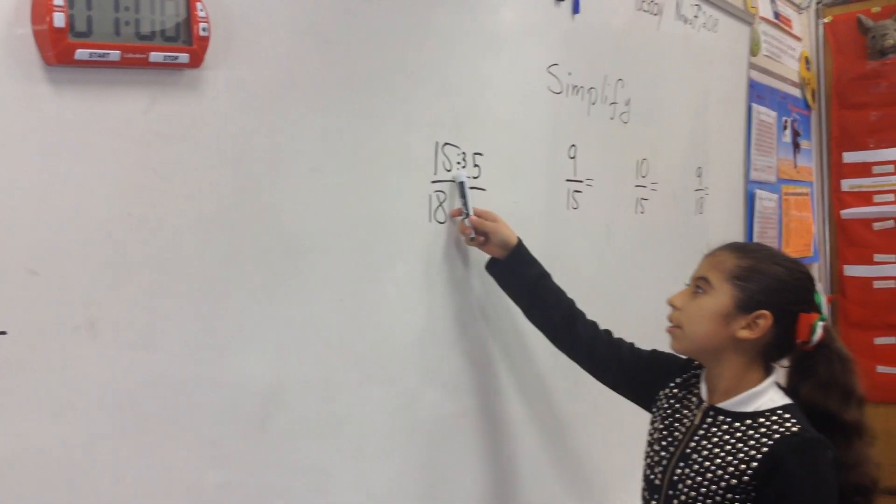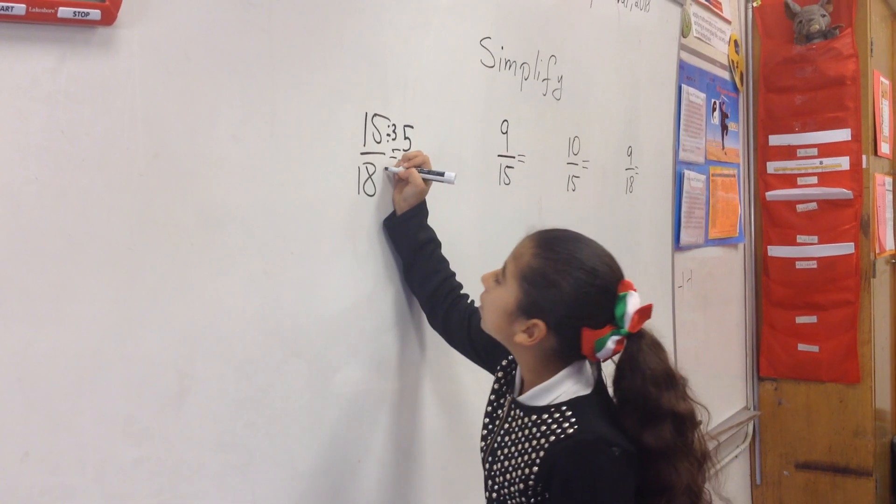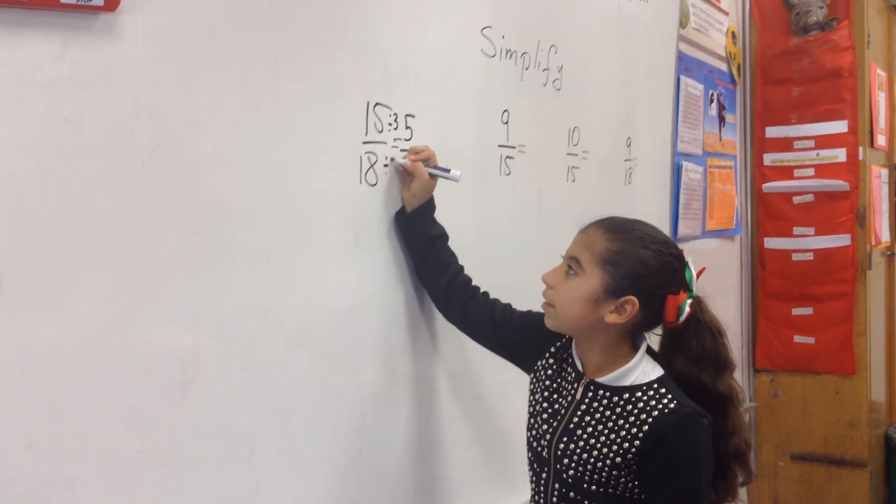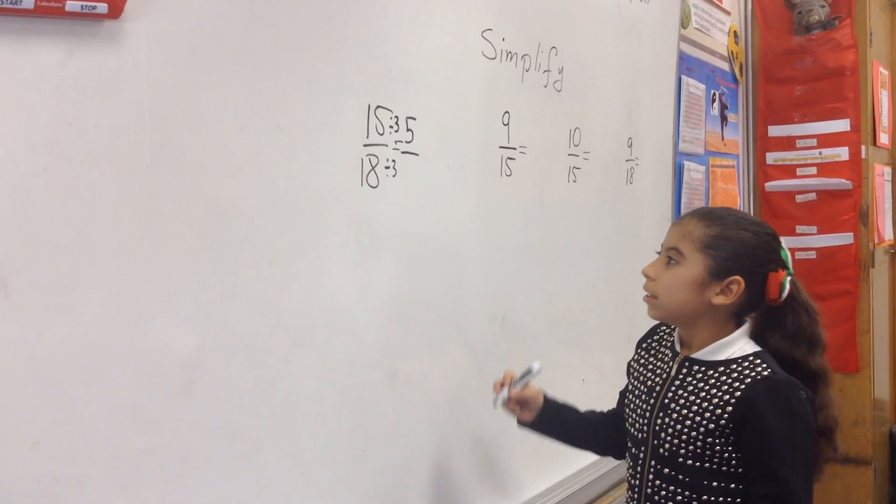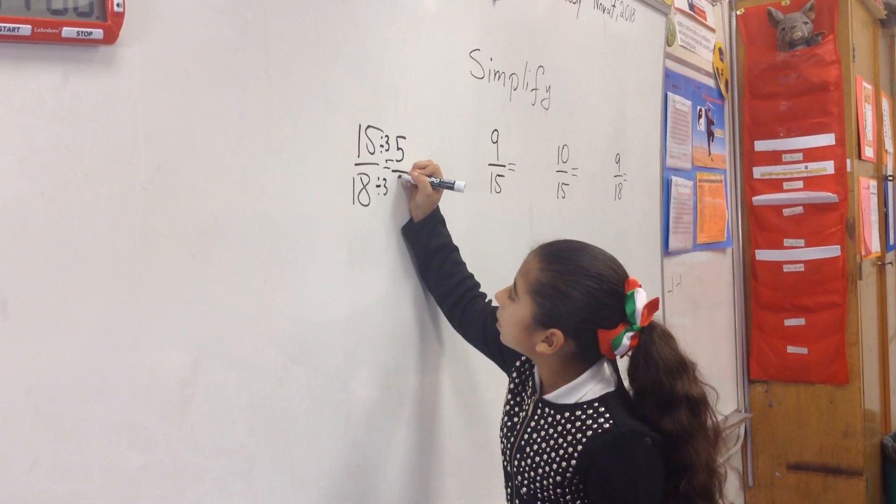We'll use it to numerator, we'll use it to denominator. I'm going to divide by 3. 18 divided by 3 is 6.